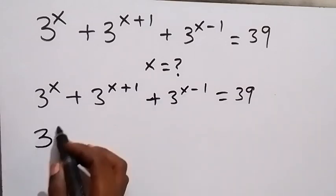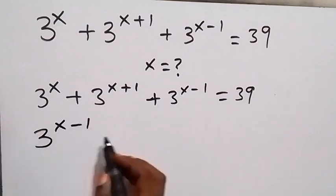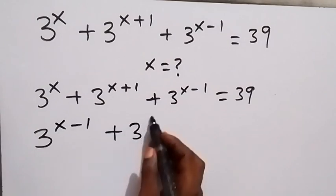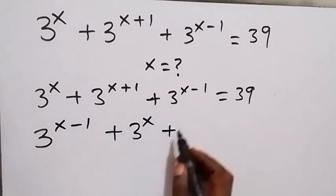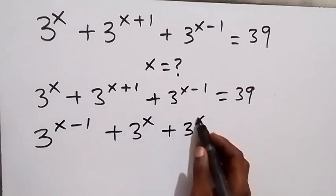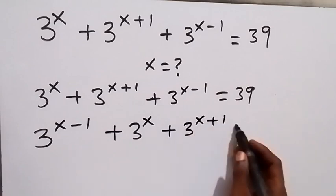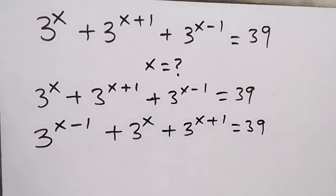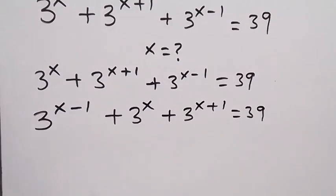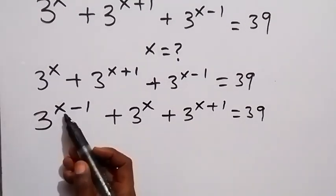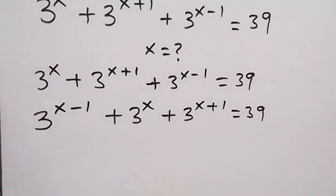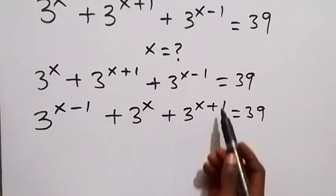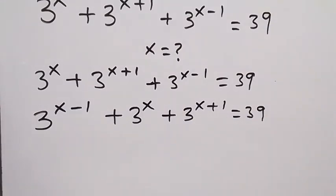This becomes 3 raised to power x minus 1, then plus 3 raised to power x, plus 3 raised to power x plus 1, equals to 39. From here, let's make x minus 1 in the power to be common. We can write x and also x plus 1 in terms of x minus 1.